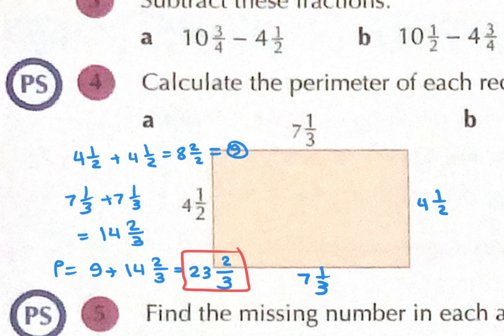You don't need to convert the mixed number to an improper fraction in this case. You can multiply 4 and a half by 2 or simply add 4 and a half plus 4 and a half. Since we're only adding and subtracting in this lesson, add length plus length and width plus width, then combine to find the perimeter.